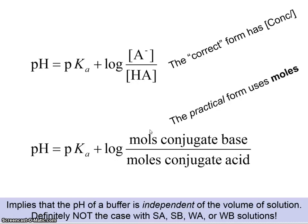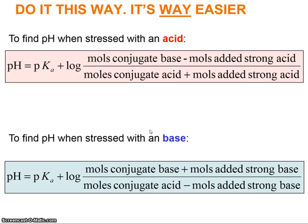Back to stressing the buffer — use the modified Henderson-Hasselbalch equation. It's much easier. If you add an acid: pH equals pKa plus log of (moles of conjugate base minus moles of strong acid added) divided by (moles of conjugate acid plus moles of strong acid added). Similarly for adding base: pH equals pKa plus log of (moles of conjugate base plus moles of strong base added) divided by (moles of conjugate acid minus moles of strong base added).